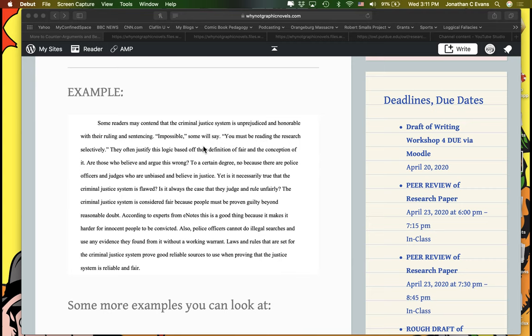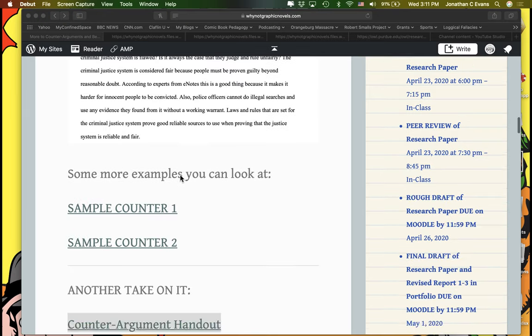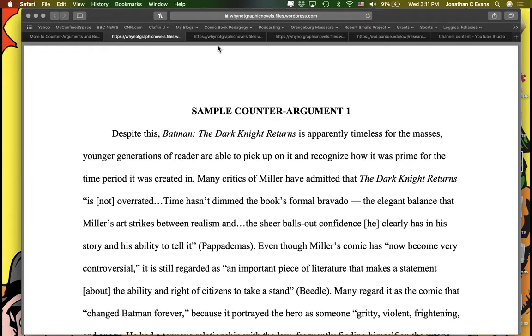Now, what this should obviously go on to say here is that if you ask certain questions, you'll see here, impossible, some will say. They are actually speculating. You must be reading research selectively. Then often justify the logic based on their definition of fair and conception of it. Are those who believe and argue this wrong? To a certain degree, no. There are police officers and judges who are unbiased and believe in justice. Yet, is it necessarily true that criminal justice system is flawed? This person asks a series of questions and then engages in a bit of response. They're actually playing the part of someone who might come along and ask questions and ask for further detail.